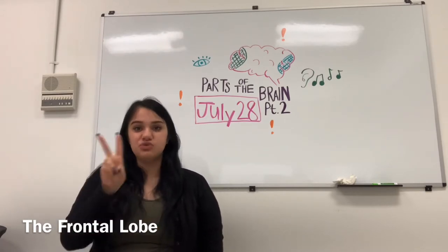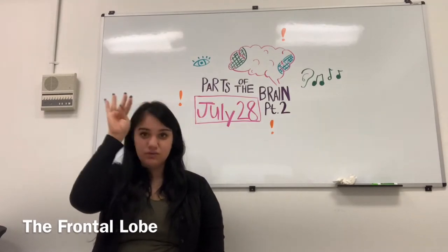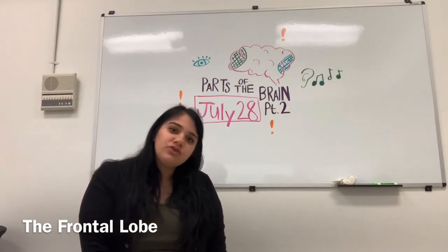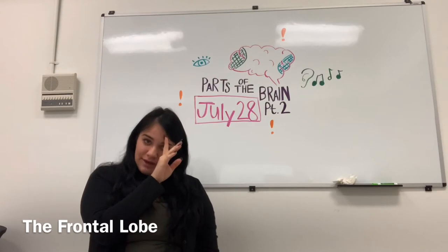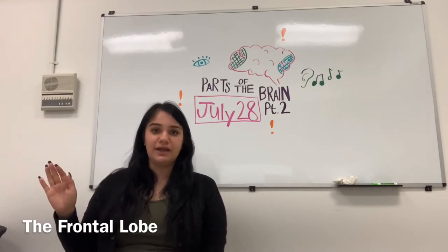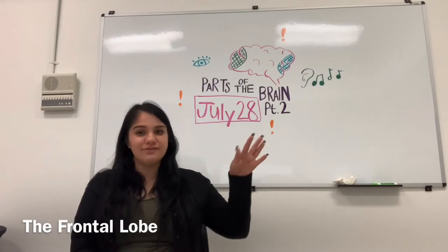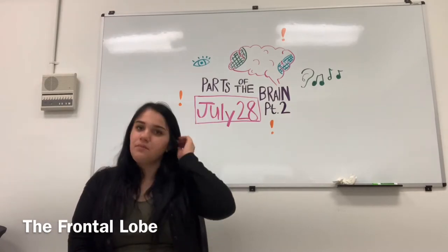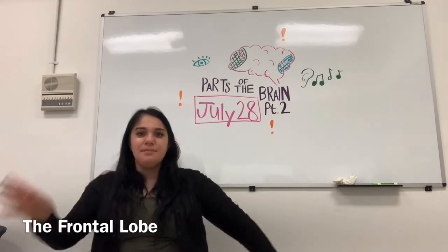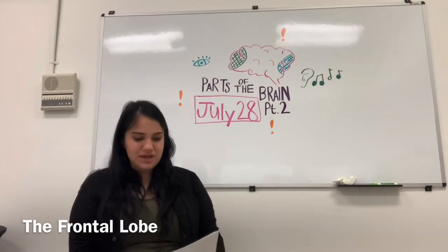The lobe is divided into two sections right down the middle, so you have a left side and a right side. What's interesting about the frontal lobe is that the left side actually controls the right side of your body, and the right side controls the left side of your body. The opposite side of the frontal lobe controls the opposite side of the body.